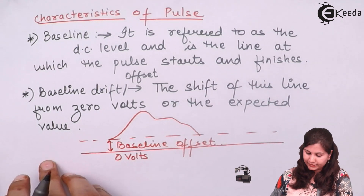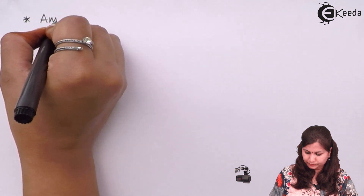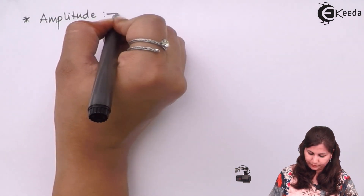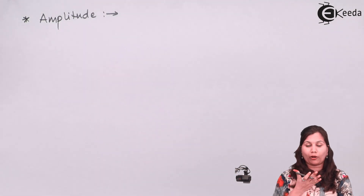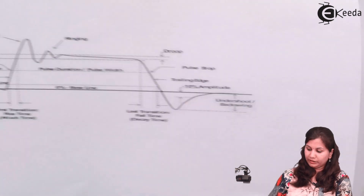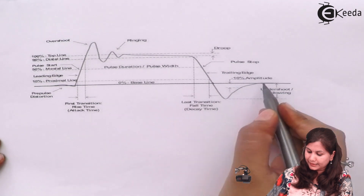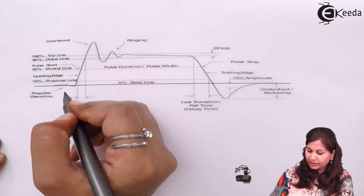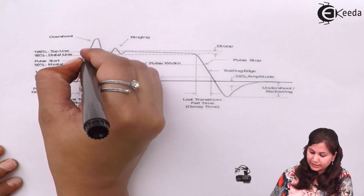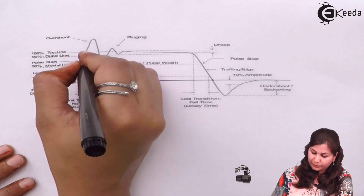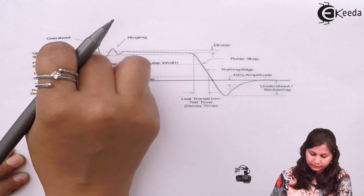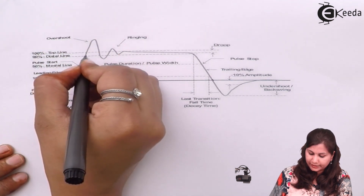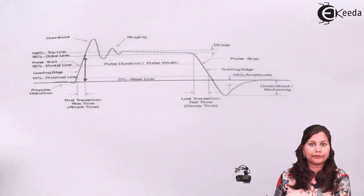Next characteristic is the amplitude. The amplitude of the pulse is measured from the baseline — it is the maximum deviation of the pulse from the baseline. The steady-state value measured from the baseline is the amplitude of the pulse.